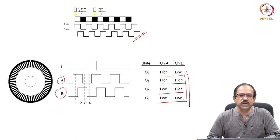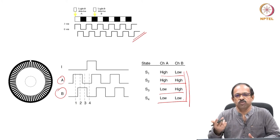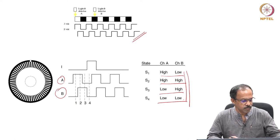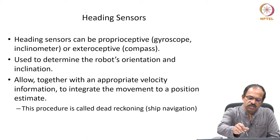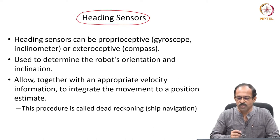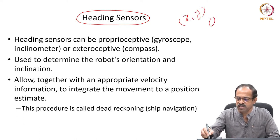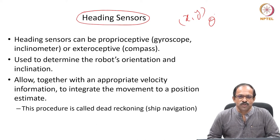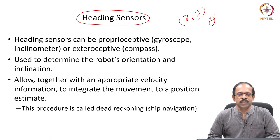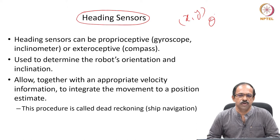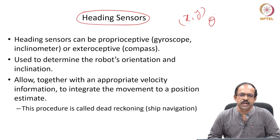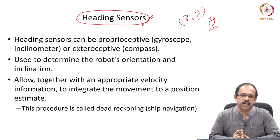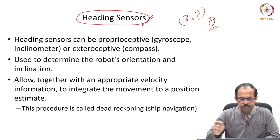Optical encoders are very commonly used in mobile robots to find the position or speed of the wheel, which helps determine the robot's position. Once you know the position, the next quantity of interest is the heading of the robot. The position of the robot is normally given by x and y, and the orientation by theta in normal planar motion. The x and y can be obtained from encoder data attached to the wheels via dead reckoning. What we are also interested in is knowing the orientation — that is where heading sensors come in.